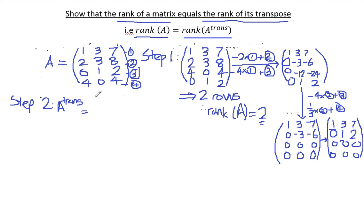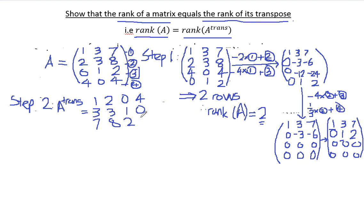Step 2 is to transpose this matrix. The rows become columns, so A transpose has entries: row 1 is 1, 2, 0, 4; row 2 is 3, 3, 2, 1; row 3 is 0, 7, 8, 2, 4. Step 3: find the rank of this transposed matrix.